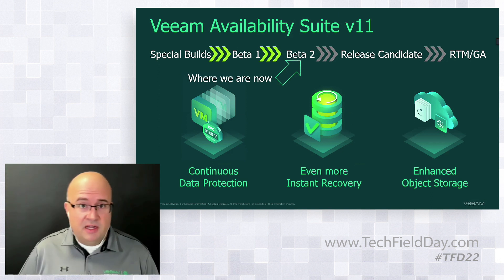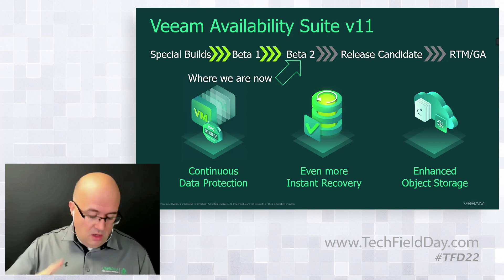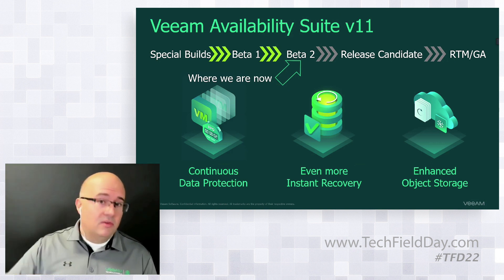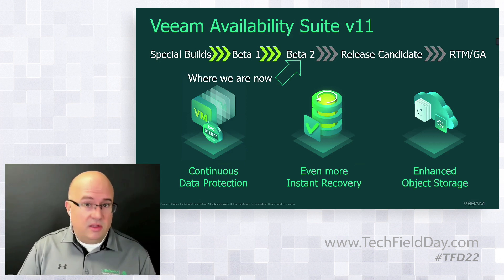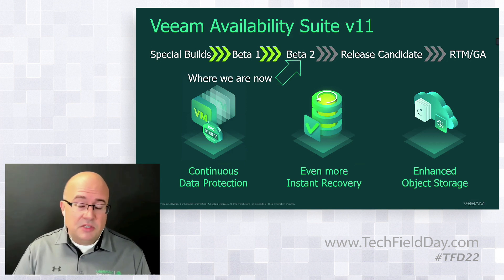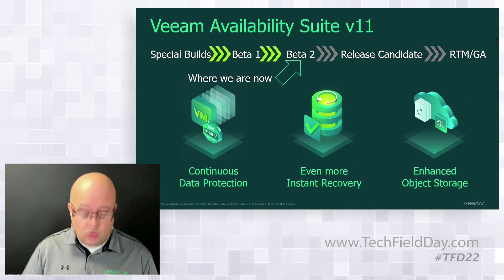The three main features are: continuous data protection; enhanced instant recovery for file servers — that's right, instant recovery of a file server — as well as SQL and Oracle databases, which is pretty cool. And then what I'm going to talk about here today: enhanced object storage, specifically Glacier Deep Archive and Azure Cool Archive.